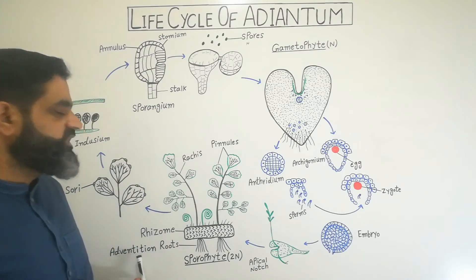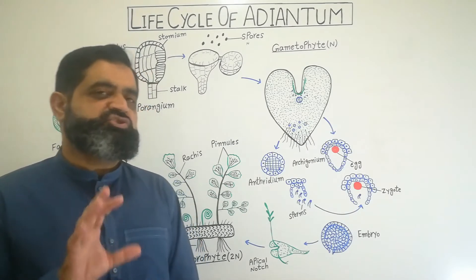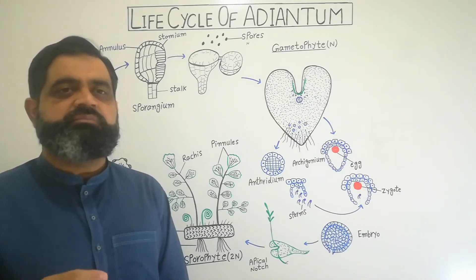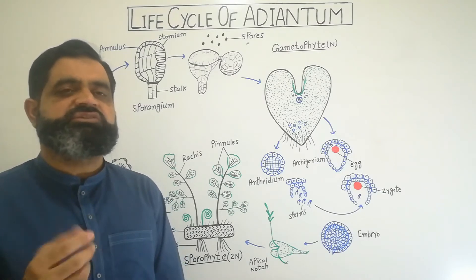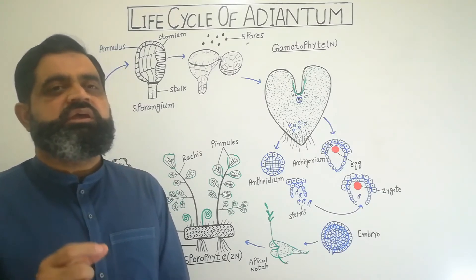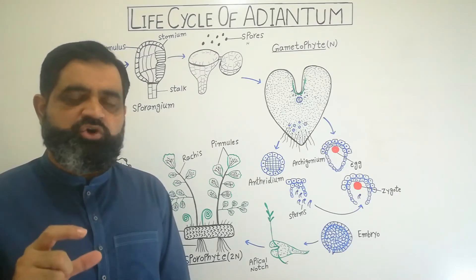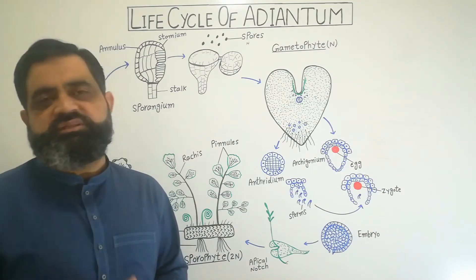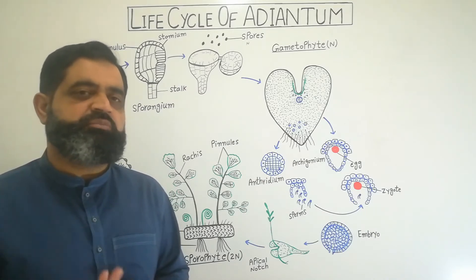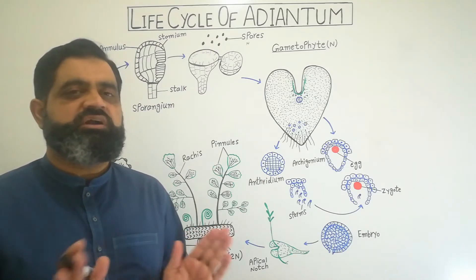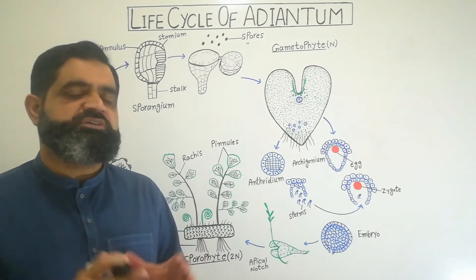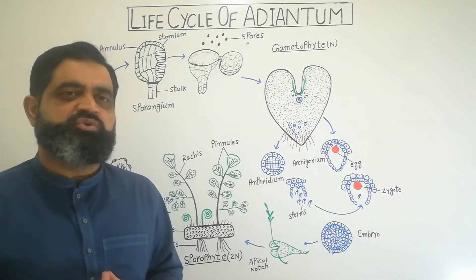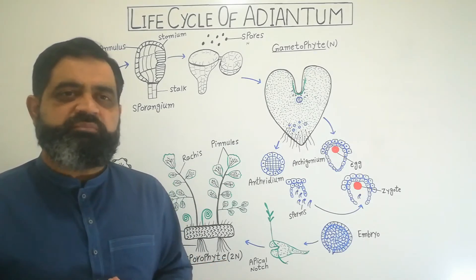These roots are known as adventitious roots. Such roots which arise from the vegetative part of the plant — like stem, branch, or leaf — are known as adventitious roots. Usually roots grow from the radicle of the embryo present in the seed, known as the primary or tap root. But these are special adventitious roots that function the same as general roots, absorbing water and minerals from the soil.